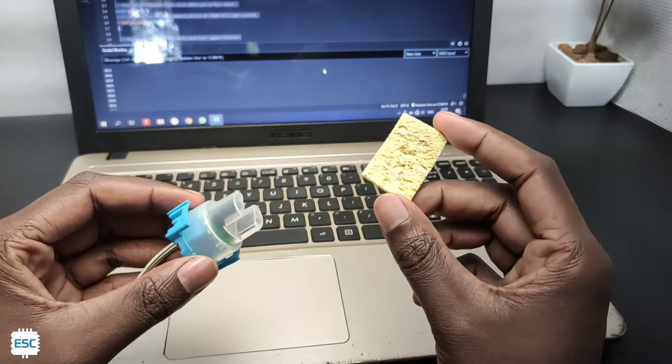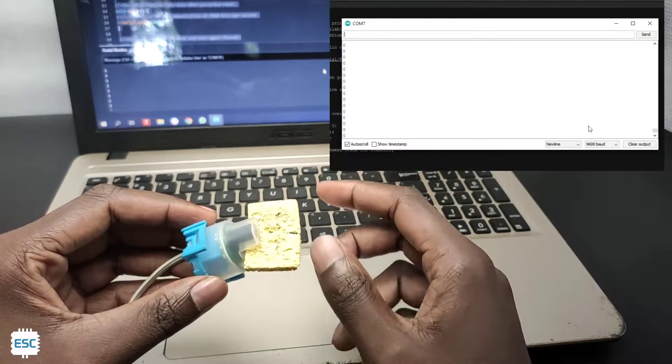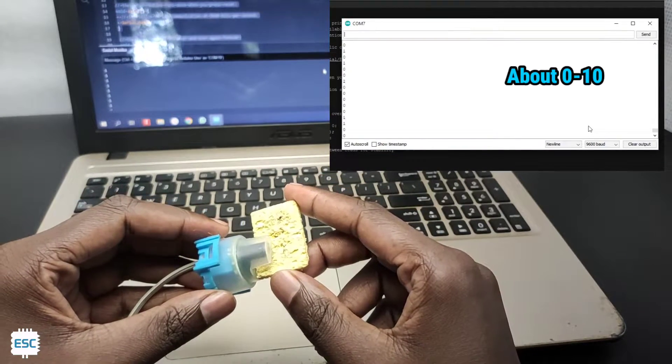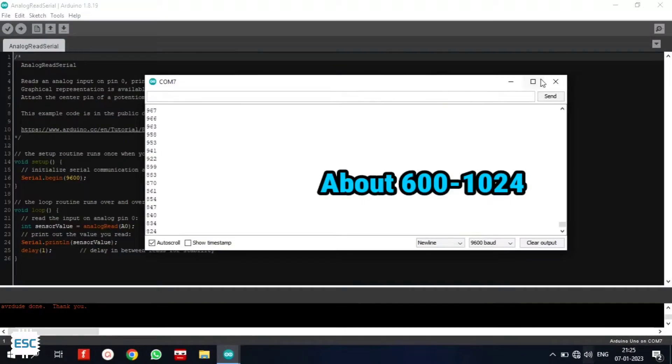Now apply some blocking material in between the sensor, just like in the video. And note that value. That value is the maximum turbidity value. Also note the dead value.